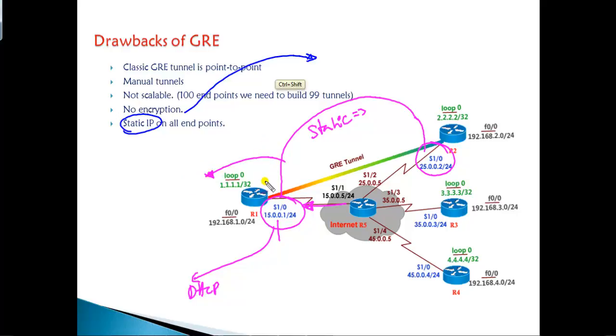The tunnel IP address source and destination have to be static IP addresses and they should not be changed. If they are changed, we need to ensure that we also make changes to the tunnel configurations as well.